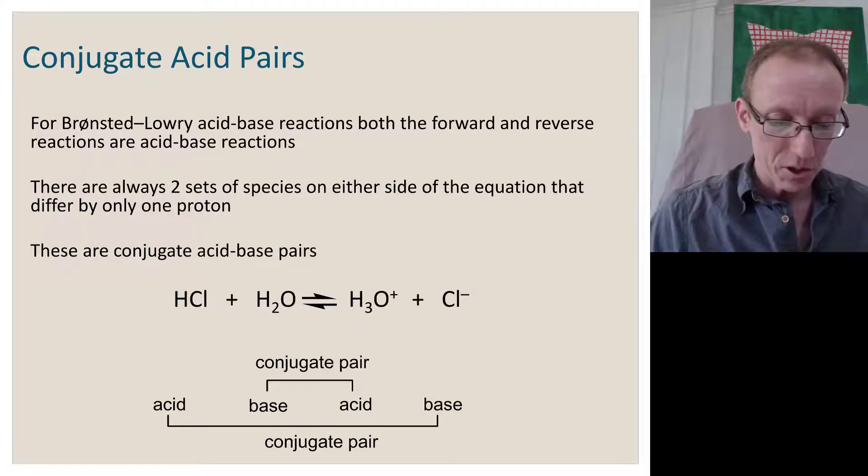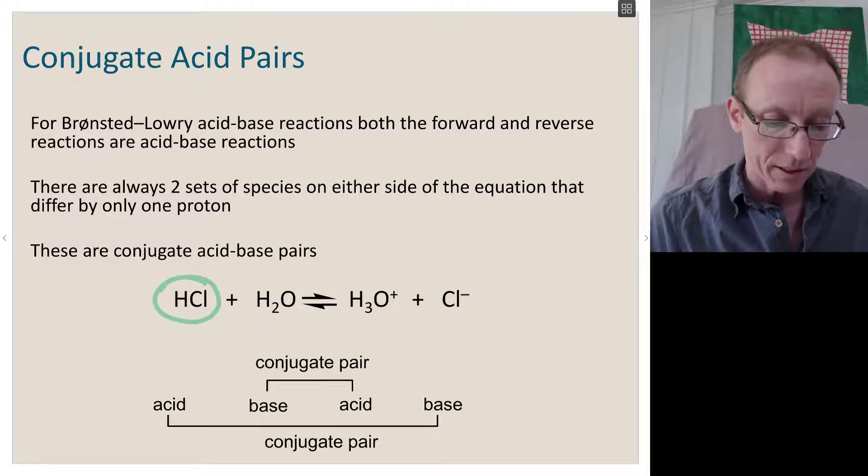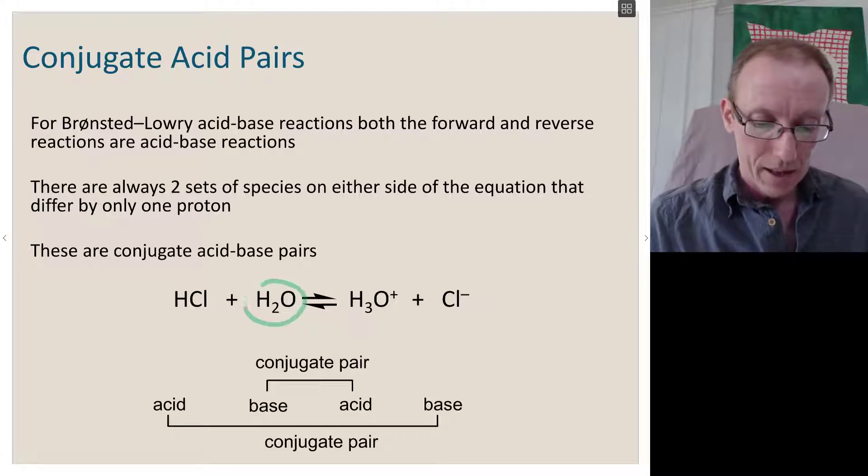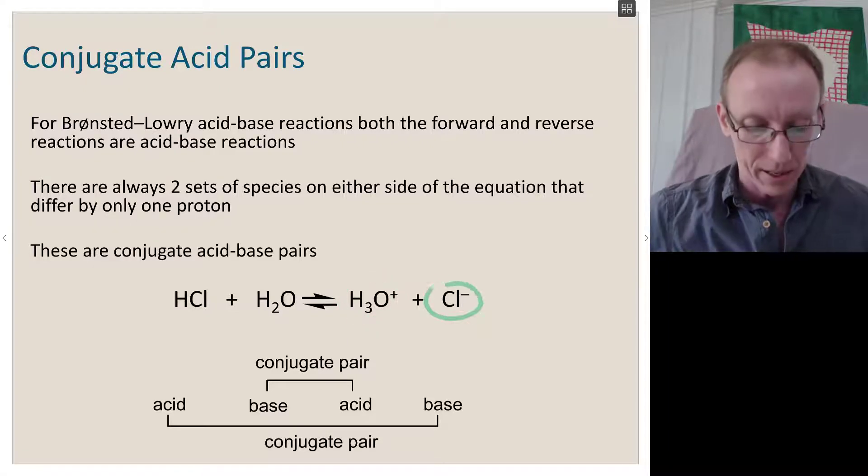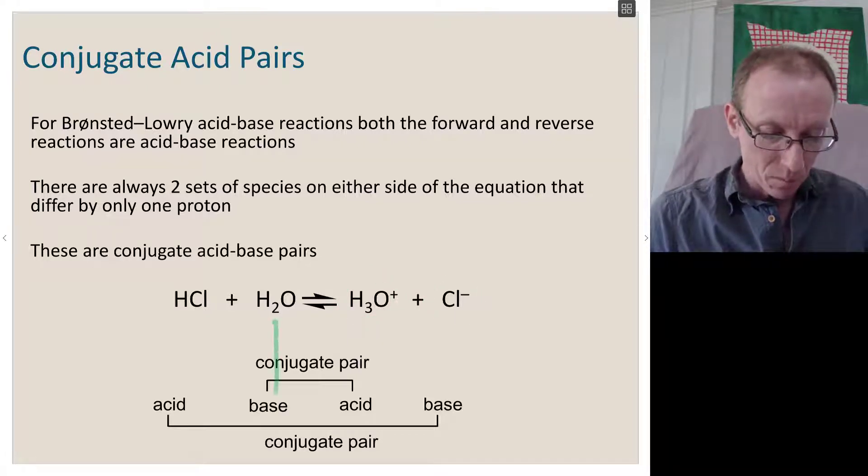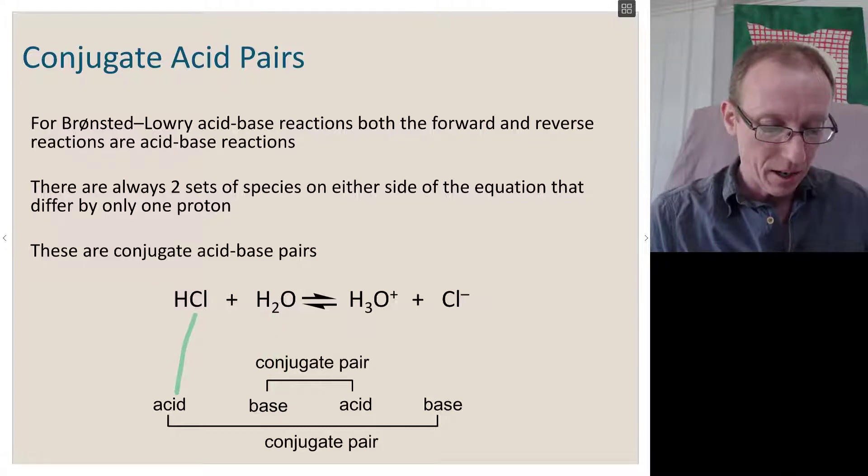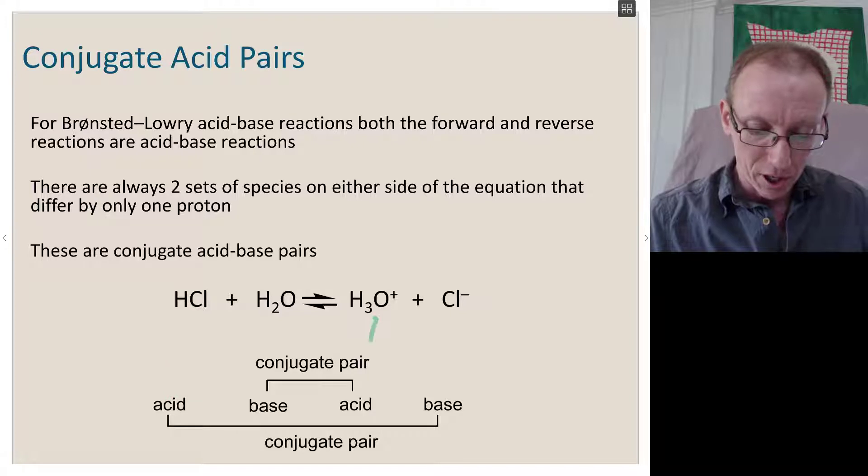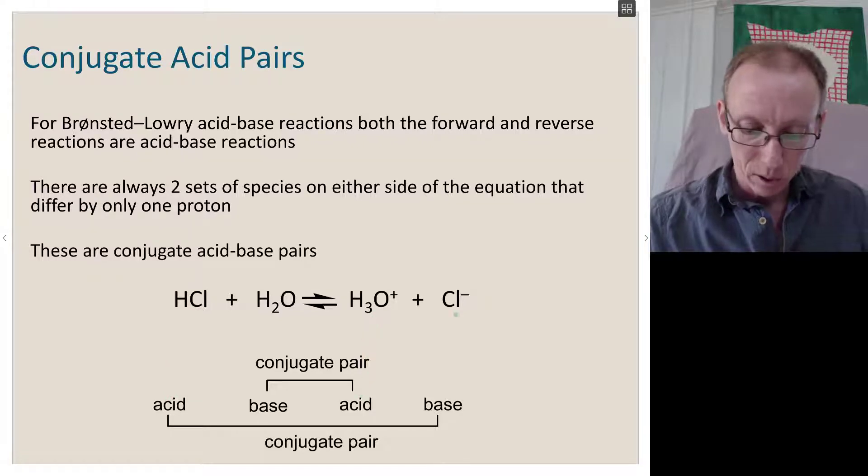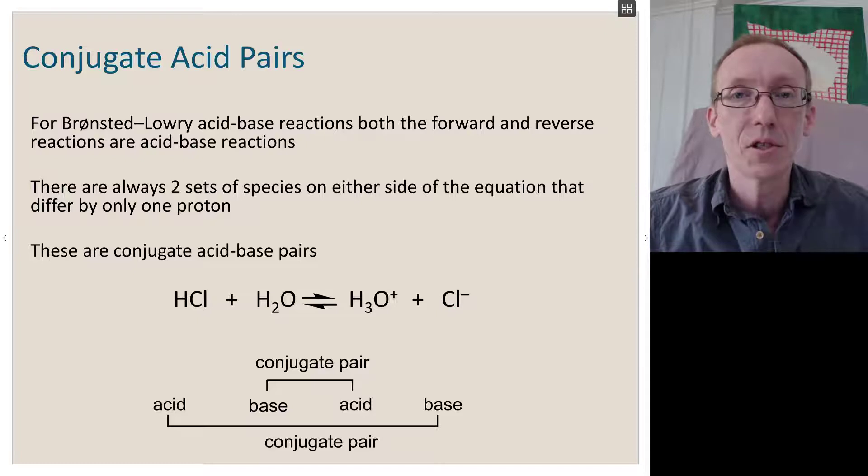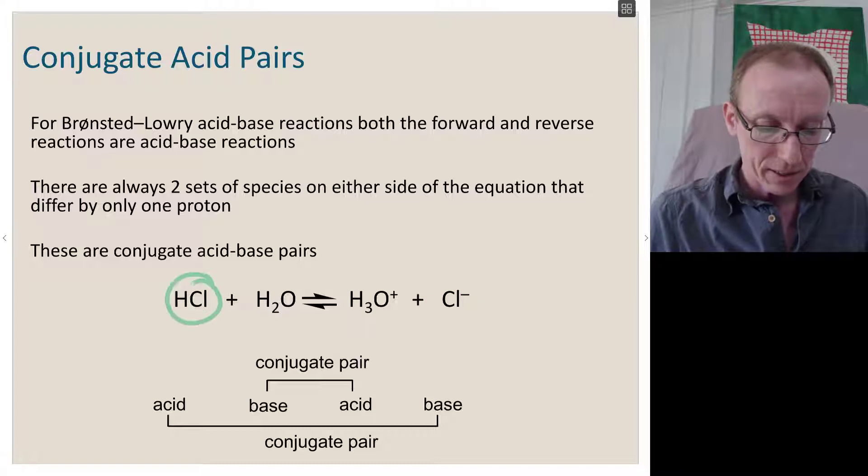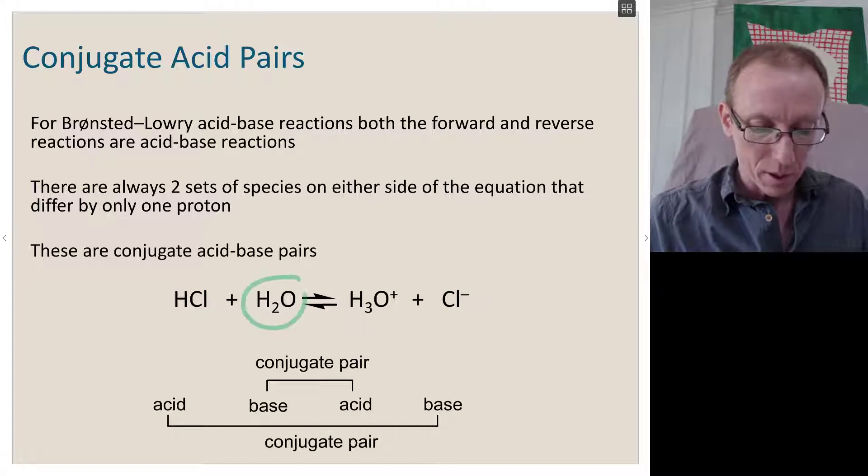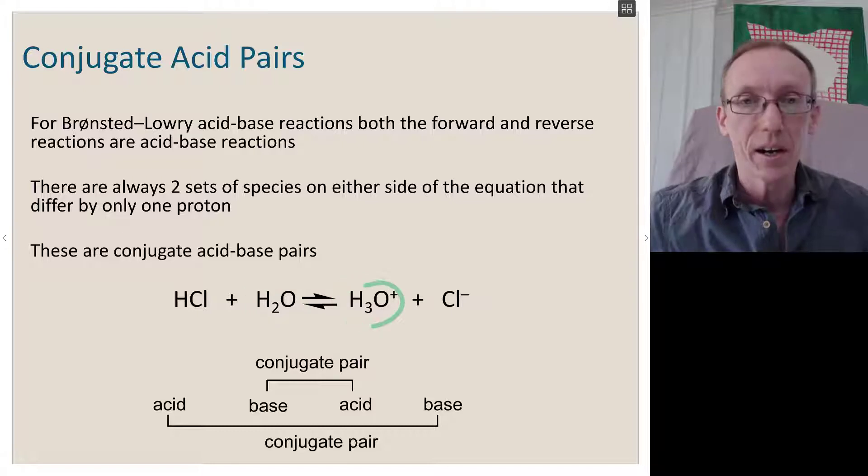Here we've got conjugate acid-base pairs. We've got hydrochloric acid and water, and they can combine to set up an equilibrium where on the right-hand side we have the hydronium ion and chloride. Here we've got the base being water and the acid being hydrochloric acid. On the other side we've got hydronium ion being the acid and chloride being the base. They form a conjugate pair. The conjugate acid of chloride anion is hydrochloric acid, and the conjugate acid of water is the hydronium ion, H3O+.